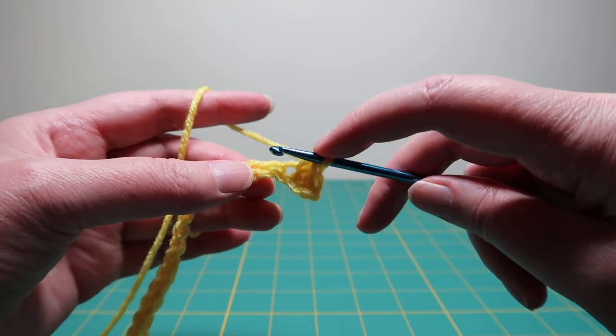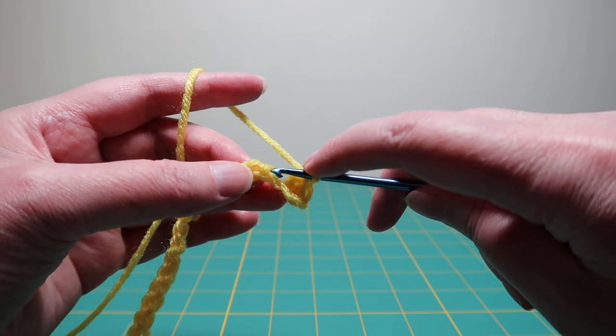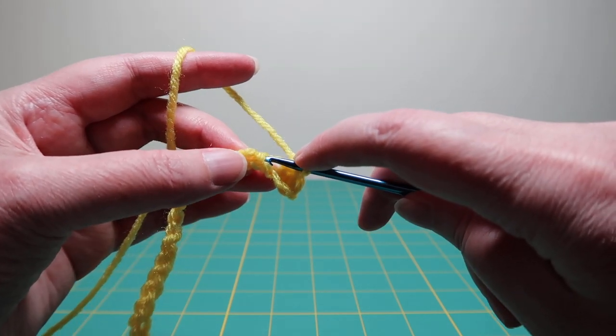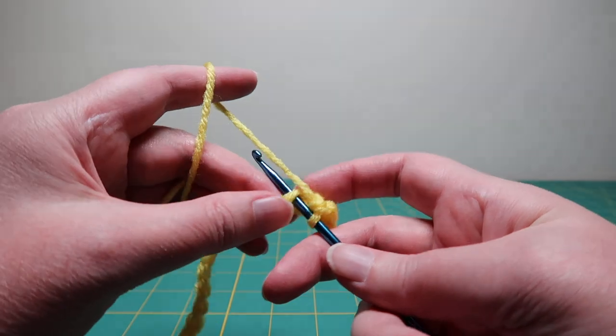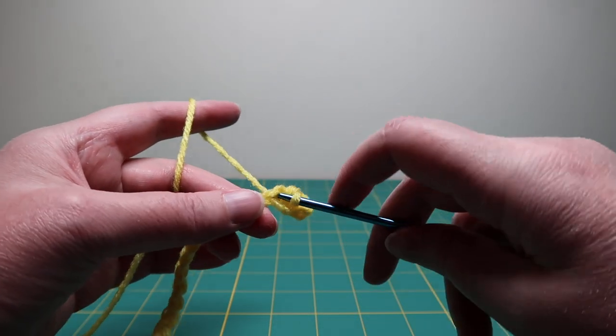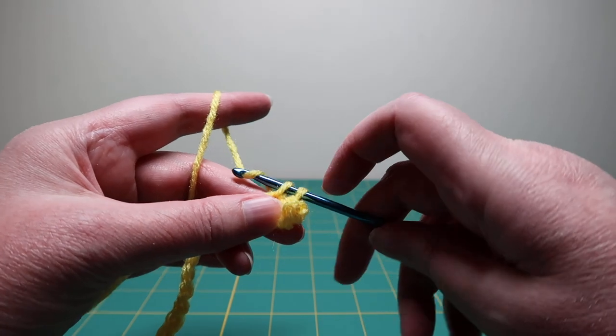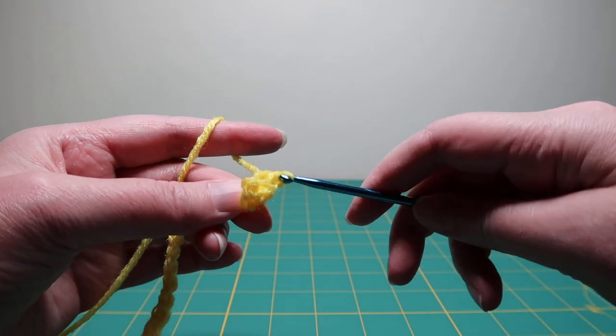Again, stick it into the very next stitch, just the top, yarn over, pull through, yarn over, pull through both loops.